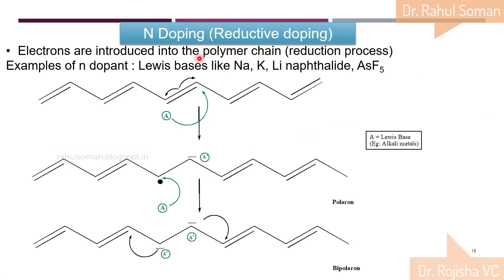In n-doping, a negative charge is incorporated into the polymer system. For adding the negative charge, we need a Lewis base or an electron-rich system — typically alkali metals. A negative charge is added, giving a radical ion and a negative charge — also called a polaron. The movement of the negative charge to one side and the radical ion to the other makes it conducting. Adding more Lewis base gives one more negative charge, forming a bipolaron. This doping improves the conductivity of the polymeric material.